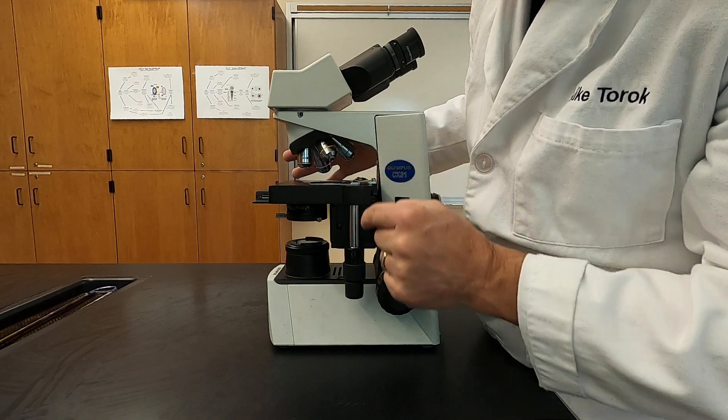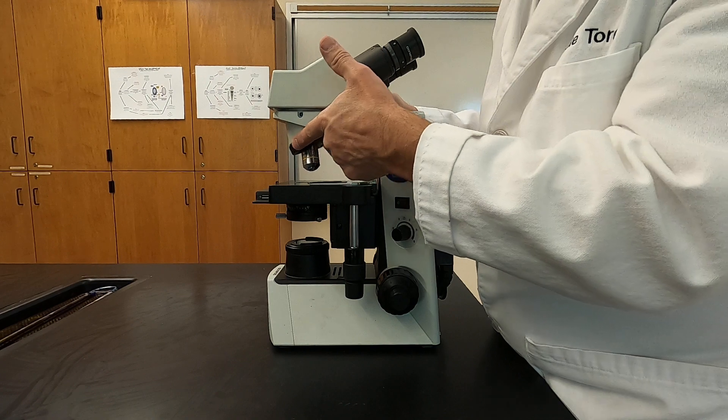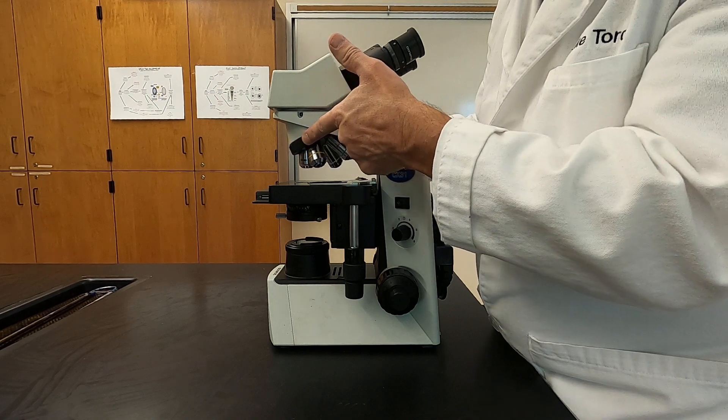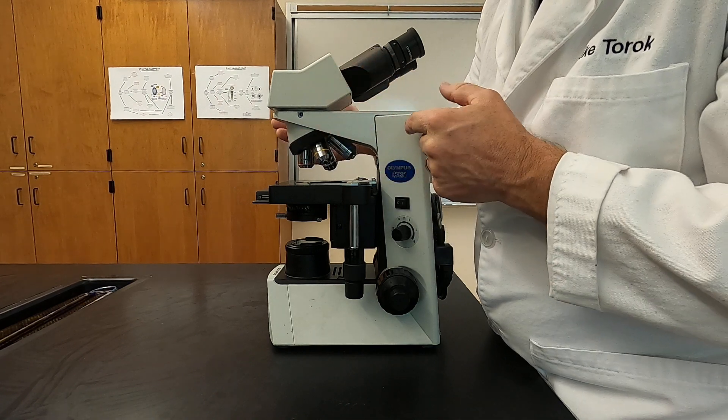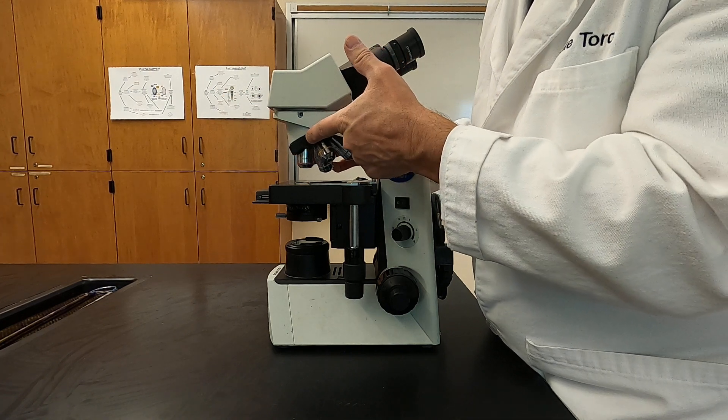You can rotate between the different objective lens powers by rotating this nose piece or this turret. When you get an objective lens seated directly over the hole in the stage, you will feel and hear it click.